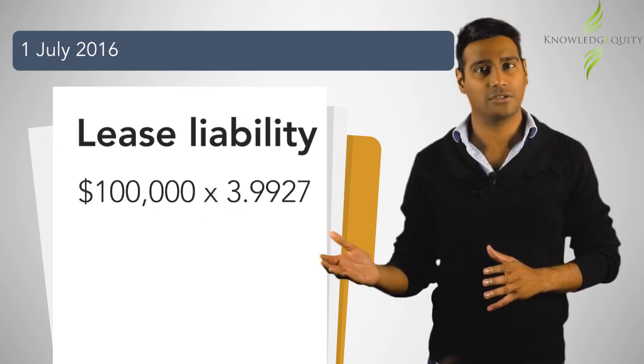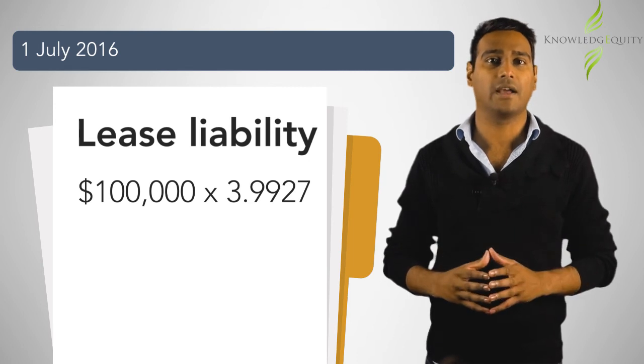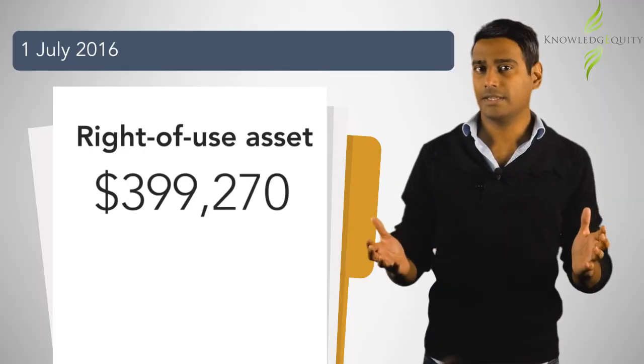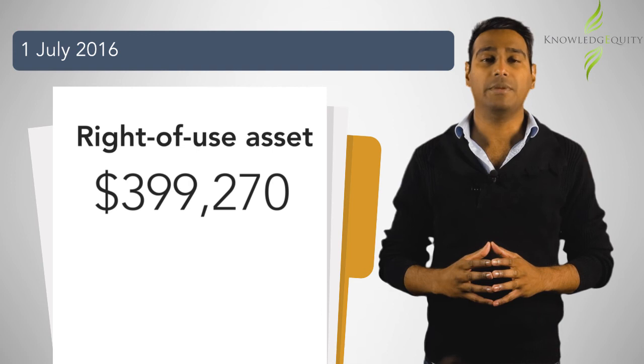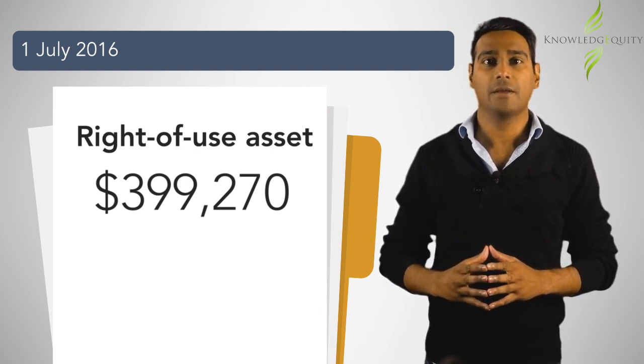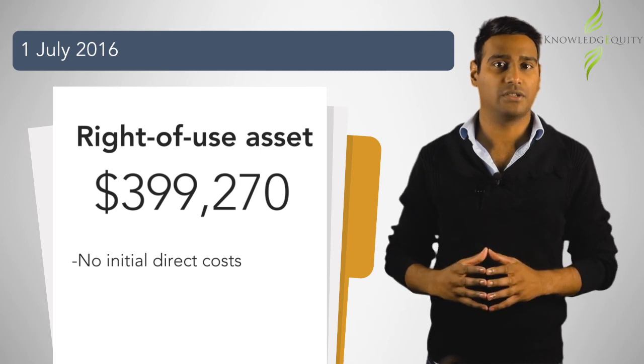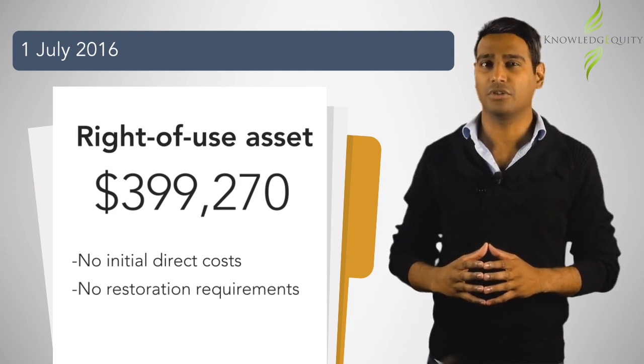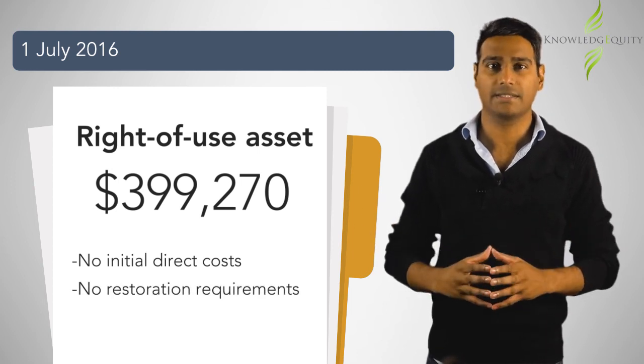That is $100,000 times 3.9927. In this example, the right of use asset would be equal to $399,270 because there were no initial direct costs or requirements to restore the tugboat at the end of the lease. To conclude, the starting point for bringing leases onto the balance sheet is to first work out the lease liability using an appropriate discount rate and to then calculate the right of use asset.